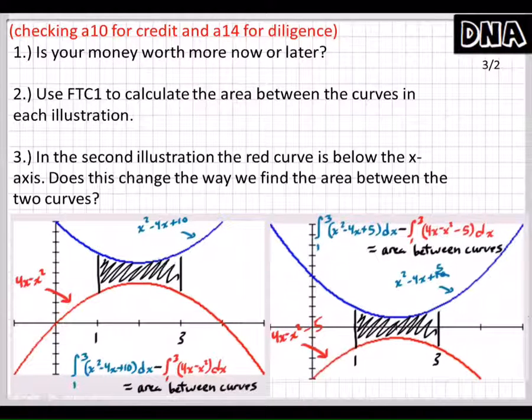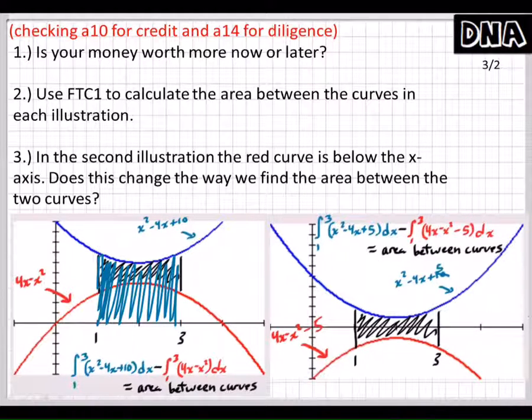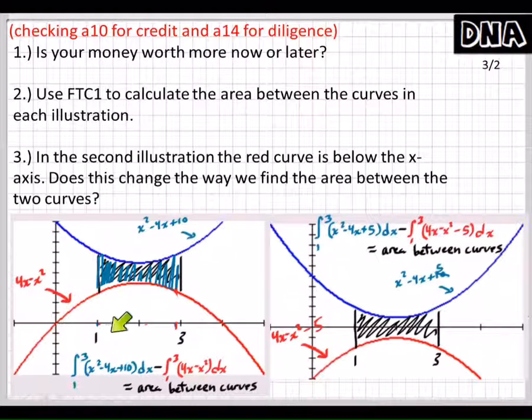Now yesterday we talked about this and we talked about how if I wanted to find the area of this, let's see, let's go with the blue. You would find the area of the blue function between 1 and 3 and then you would find the area of the red function. And then what would you do with those two areas? You'd subtract them. If you took away the area of the red function, this is what you would get, right? You would be left with the area that you want. And so that's what we have right here. We have the blue function, the area underneath the blue function, and we subtract the area underneath the red function.